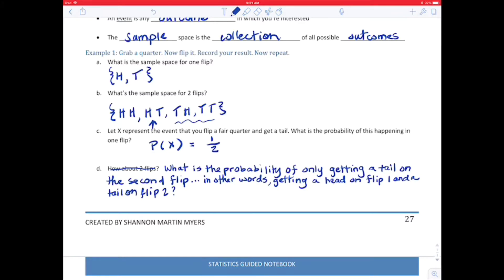What is the probability of only getting a tail on the second flip? So in other words, getting a head on flip one and a tail on flip two. Well, the only way that happens in our sample space is that second way I listed in the set, so the probability of a head and then a tail would equal one way out of four. Does that make sense? All right, good, good.